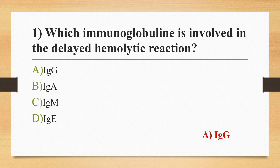Rh incompatibility is also a delayed hemolytic reaction, and minor blood group antigens cause delayed hemolytic reactions. Moving to other options: IgM causes acute hemolytic reaction, like ABO incompatibility. IgA causes anaphylactic hemolytic reaction. Usually IgE is responsible for anaphylactic reaction, but in the case of anaphylactic hemolytic reaction, it is caused by IgA.